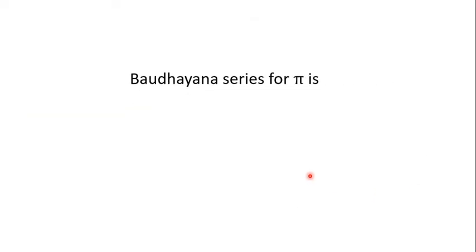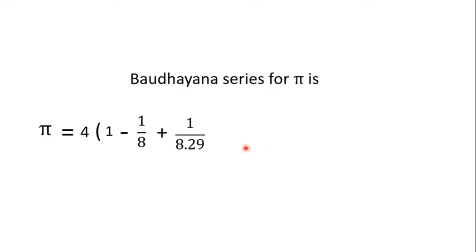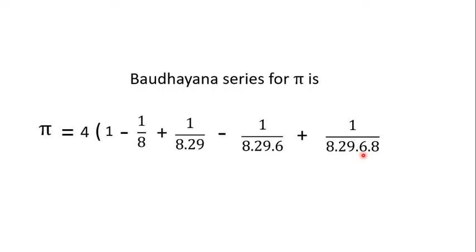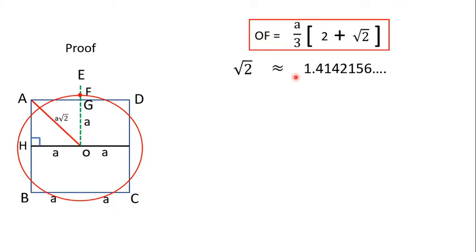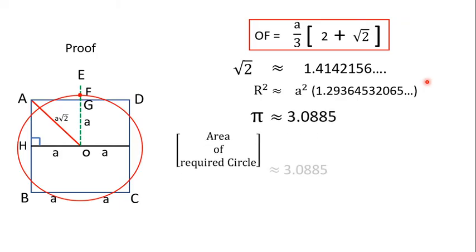Baudhayana also gave a series for the value of π: π equals 4 times (1 − 1/8 + 1/(8×29) − 1/(8×29×6) + 1/(8×29×6×8)). On simplification, this gives approximately 3.0885. Using this value of π and the computed r², we can now find the area of the circle.